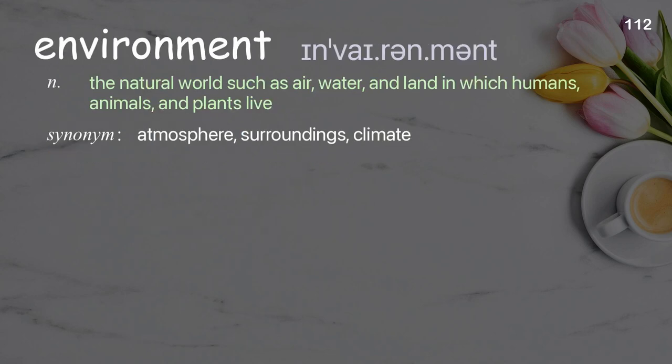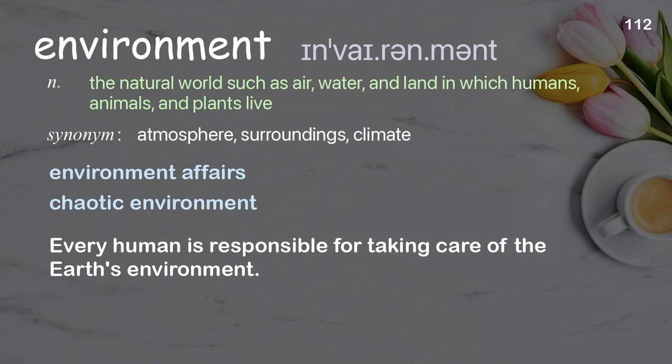Environment: the natural world such as air, water, and land in which humans, animals, and plants live. Examples: chaotic environment. Every human is responsible for taking care of the Earth's environment.